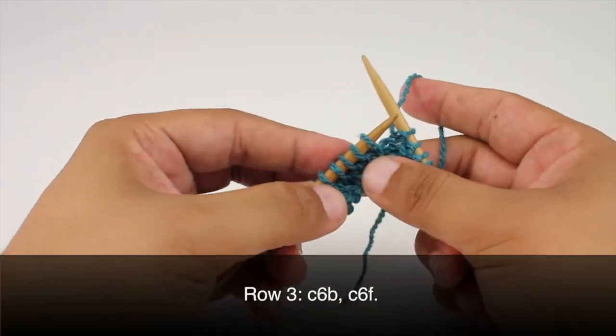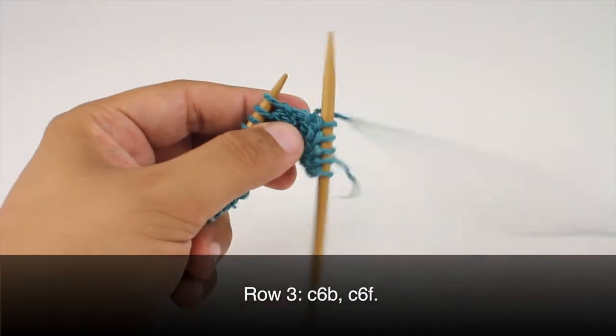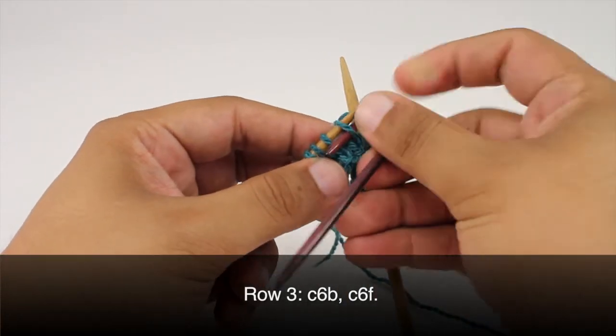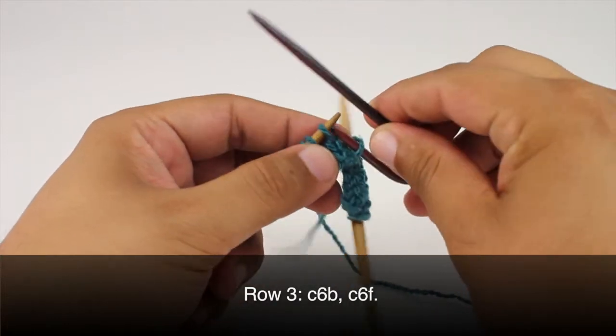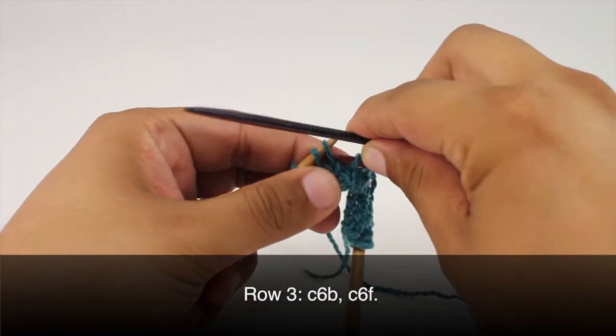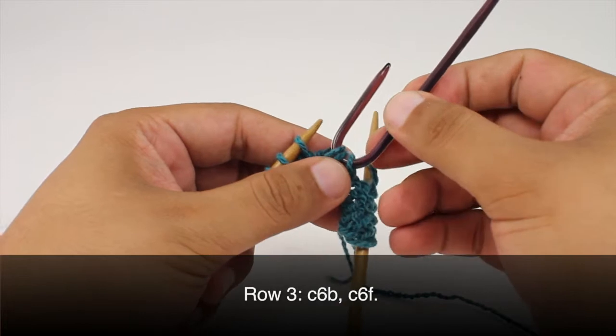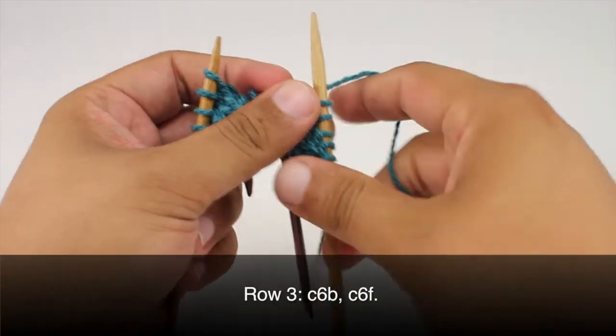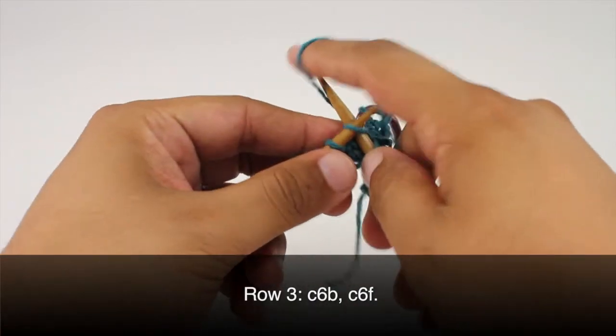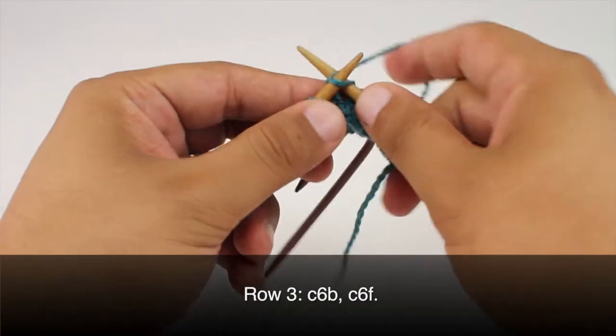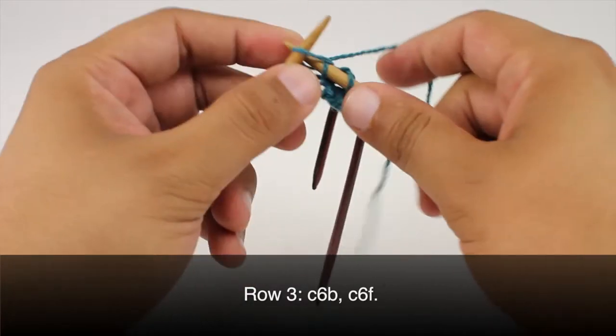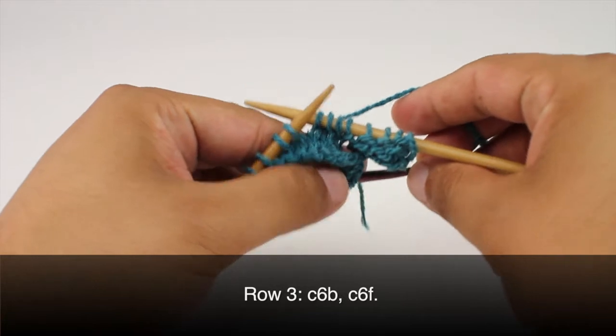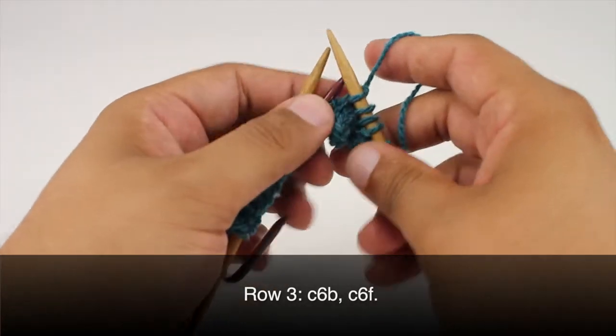Row three. We're going to begin by doing a cable six back. So we're going to take our cable needle or double-pointed needle and slip the first three stitches onto our cable needle. Then we're going to hold this behind our work and knit the next three stitches from our main needle. Then we're going to take our cable needle and knit the three stitches from our cable needle.